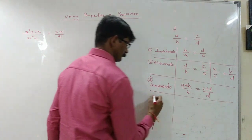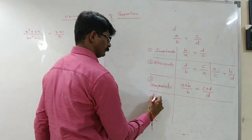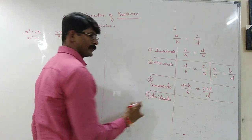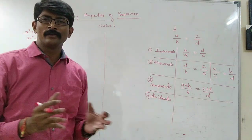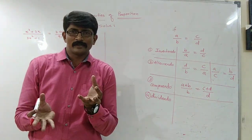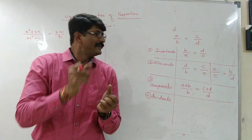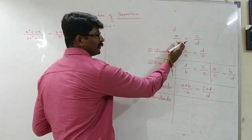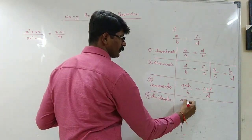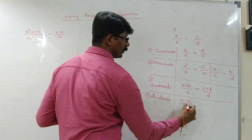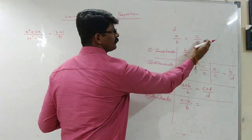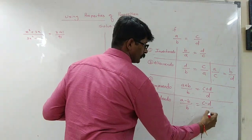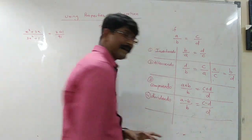Then Dividendo. What exactly is Dividendo? Dividendo is the opposite — whatever is the denominator, we subtract it from the numerator. So the denominator is B; we subtract from A, giving A minus B upon B, which equals C minus D upon D.